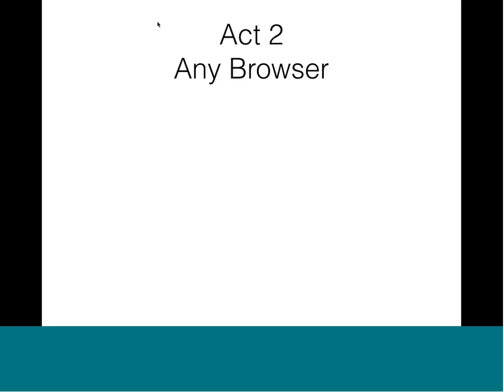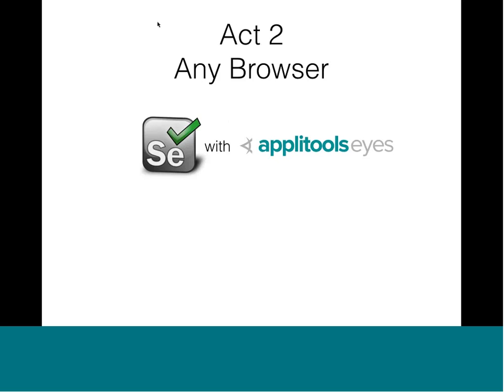Moving on, act two: any browser. Selenium with Applitools Eyes is great, except we're only running our tests on Firefox right now. So we can add in Sauce Labs. Sauce Labs gives us access to every browser and operating system combination that we can think of. And just like with Applitools Eyes, it's done with just a few lines of code.